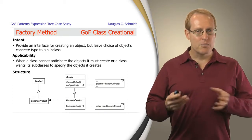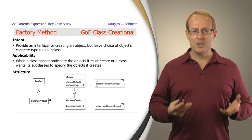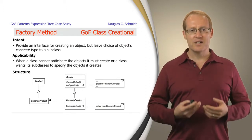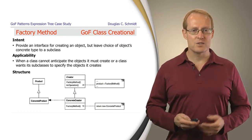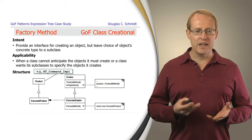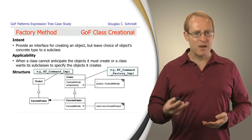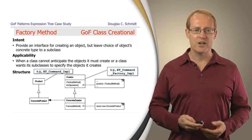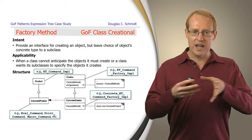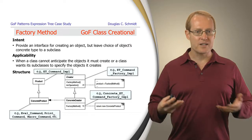To use the factory method pattern, you inherit from creator to make a concrete creator, and inherit from product to make a concrete product. The concrete creator's factory method creates the appropriate concrete product, but returns it as a pointer or reference to the product base class. This uses the fundamental concept in object-oriented design that you can access pointers to derived class instances through pointers to base class instances. In our expression tree example, the ET command impl would be the product, and the ET command factory impl would be the creator class with factory methods that know how to make the various types of commands.